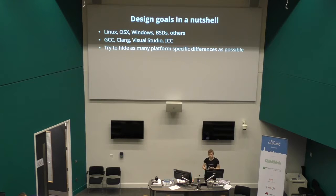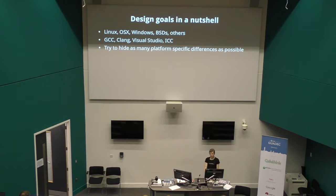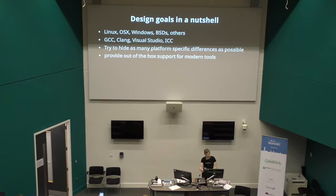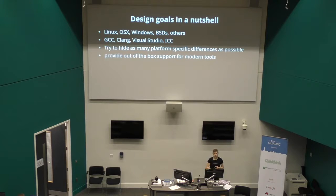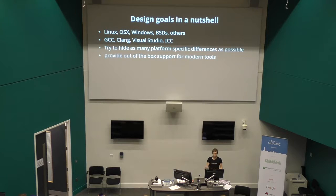Try to hide as many platform differences as possible. When that's not possible, it's exposed directly so that you as a developer know what you need to handle. And out-of-the-box support for modern tools — things like address sanitizer, running unit tests under Valgrind, scan-build (the static analyzer that ships with Clang) — all these things should just work out of the box, as opposed to copying 1,000 lines of make, shell, and M4 from one place to another and hoping it works.